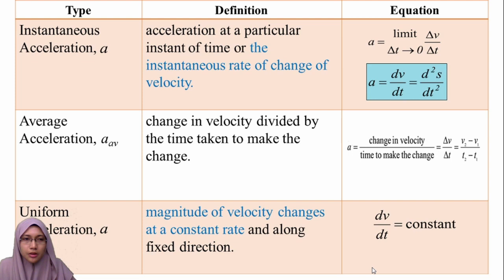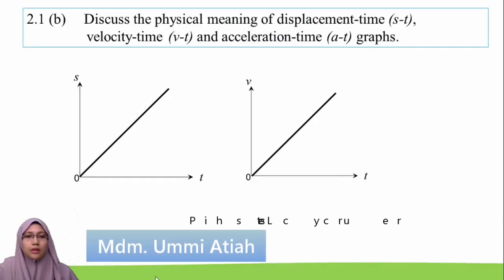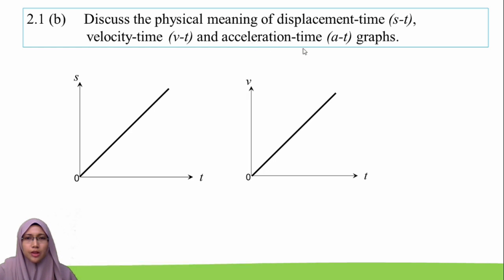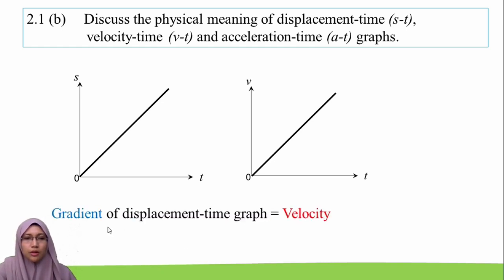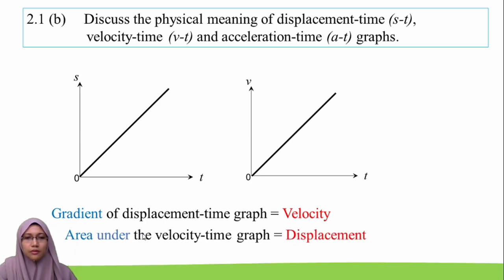For acceleration, the definition of each type is quite similar to velocity — we have instantaneous acceleration, average acceleration, and uniform acceleration. The next learning outcome is to discuss the physical meaning of the displacement-time, velocity-time, and acceleration-time graphs. The most important characteristics to analyze are the gradient of the graph and the area under the graph. For example, the gradient of the displacement-time graph represents velocity.